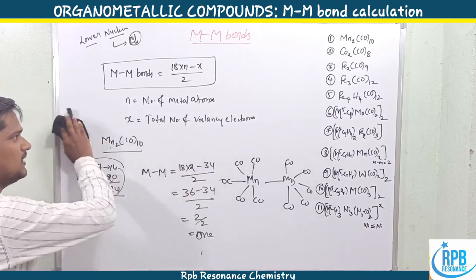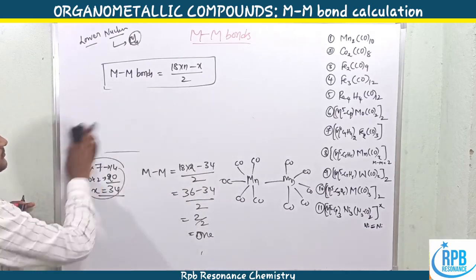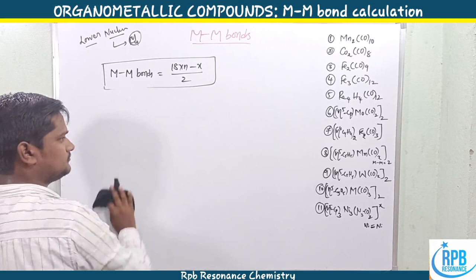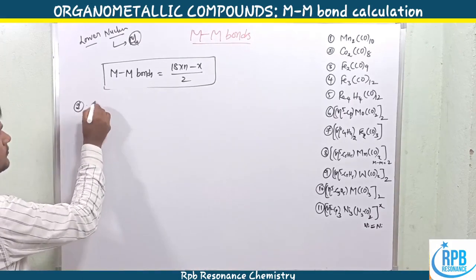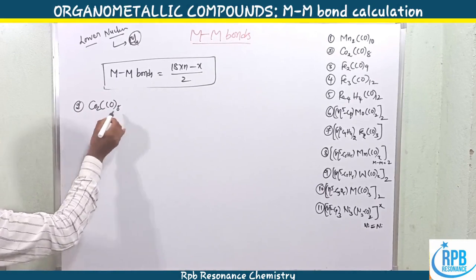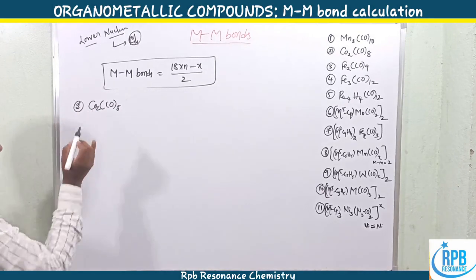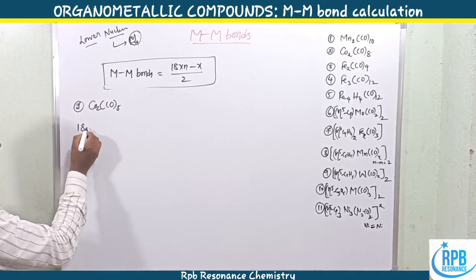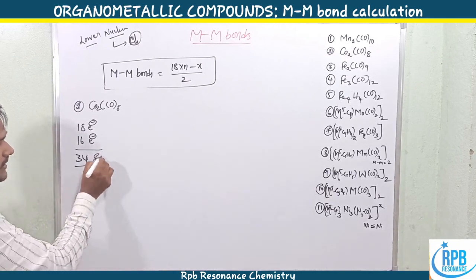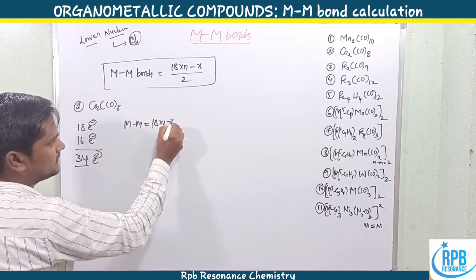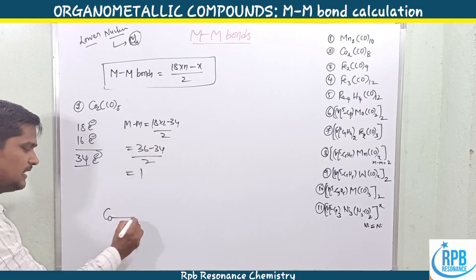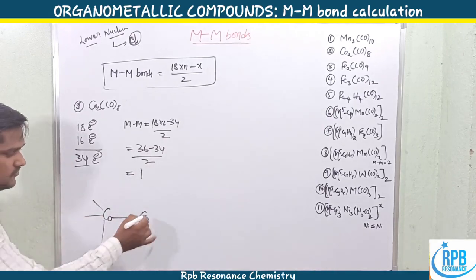Now let's move to the second example: Co₂(CO)₈, dicobalt octacarbonyl. Cobalt has the configuration s²d⁷, giving 9 electrons per metal. Two Co atoms give 18 electrons, and eight carbonyls give 16 electrons, for a total of 34 valency electrons. Metal-metal bonds = (18×2 − 34) / 2 = (36 − 34) / 2 = 1. So a single Co–Co metal bond is observed.